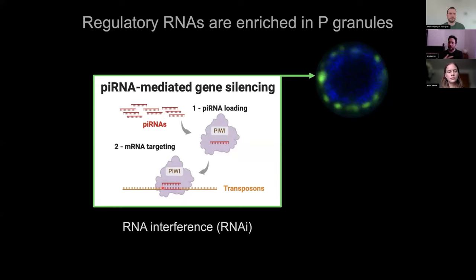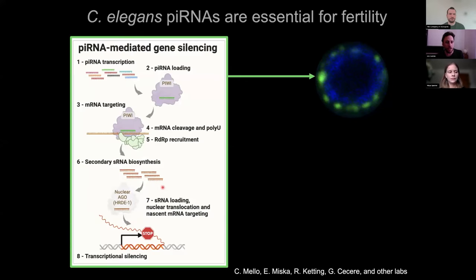piRNAs have been very well characterized in Drosophila and mice, targeting and silencing transposons and repetitive elements to maintain germline integrity and function. But the situation in C. elegans is quite different. There are thousands of highly variable piRNA sequences that are individually expressed in germ cells, and they can target mRNAs without requiring perfect antisense complementarity.